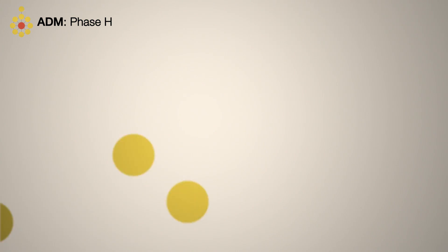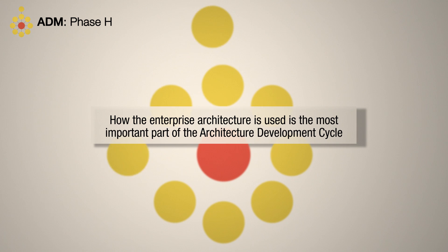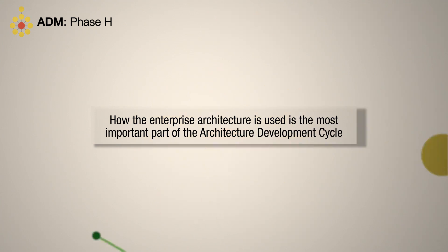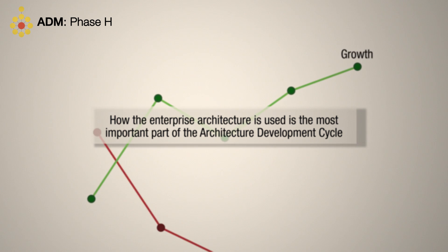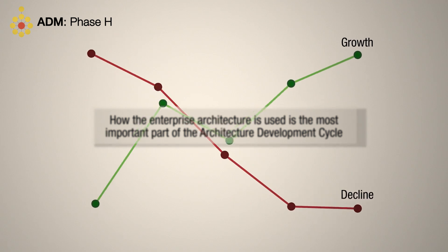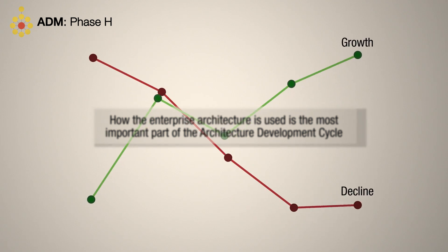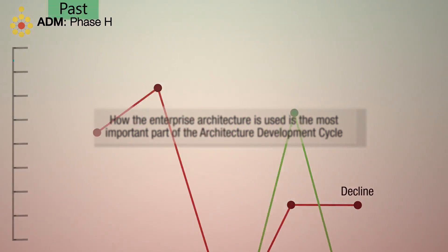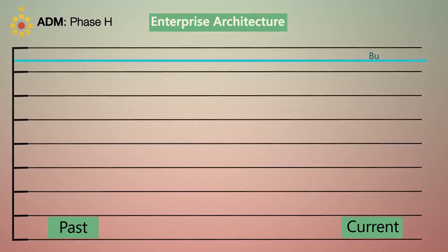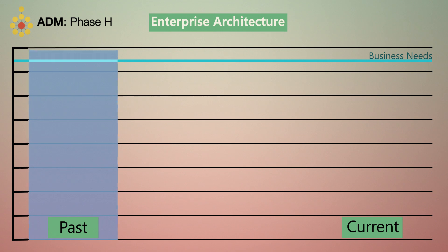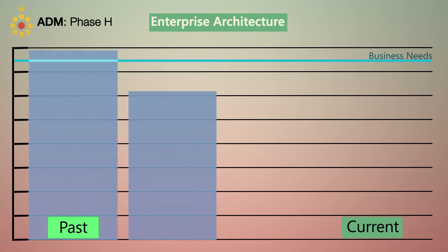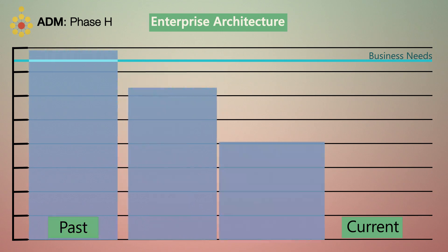How the enterprise architecture is used is the most important part of the architecture development cycle, so monitoring business growth and decline is critical in Phase H. Eventually, the enterprise architecture that worked for the organisation yesterday ceases to support the capabilities of today or tomorrow.